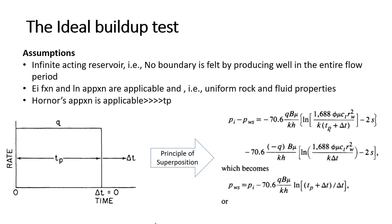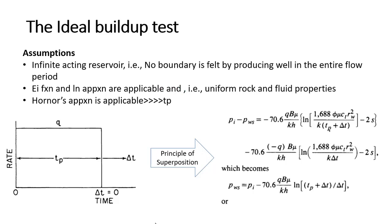In the ideal pressure buildup test, the assumption is that there is an infinite acting reservoir — infinite acting means there is no boundary felt by the producing well during the entire flow period. When we say infinite acting, the EI function and the ln approximation are applicable because rock and fluid properties are uniform. Also the Horner approximation is applicable, where we talk about the Horner producing time tp. In previous classes we had seen how to estimate that tp value.